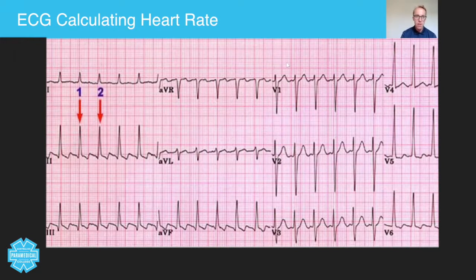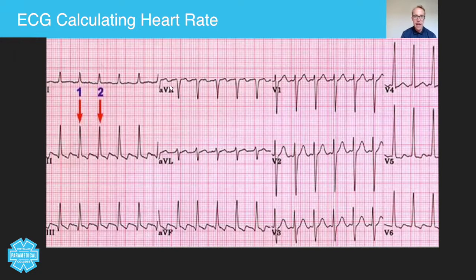So the first thing you need to do is find two R-waves and try your best to follow lead two. Going back a step, here's your normal 12-lead: lead one, lead two, lead three, AVR, AVL, AVF, V1, V2, V3, V4, V5, V6. That's your 12-lead ECG — there are a couple of things intentionally missing from the ECG.